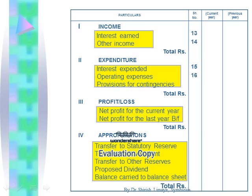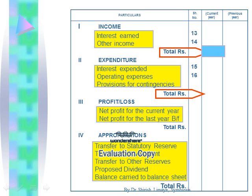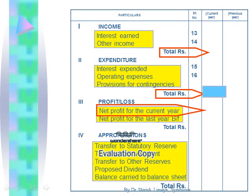After writing the respective totals of Schedule 13 and Schedule 14, the total income is recorded. Then the total of expenditure — that is, Interest Expended (Schedule 15), Operating Expenses (Schedule 16), and Provisions for Contingencies — is recorded. Net profit for the current year is ascertained by deducting expenditure from income and the amount is recorded. It is compulsory for the banking company to transfer 20% of the current year's profit to Statutory Reserve.